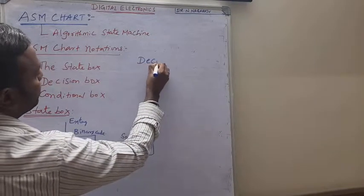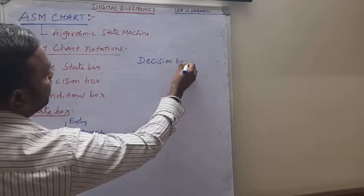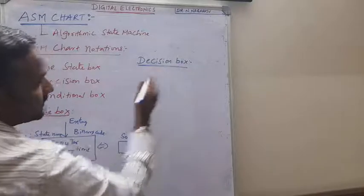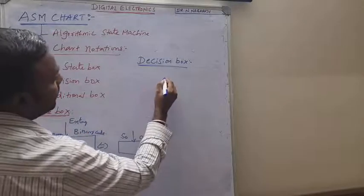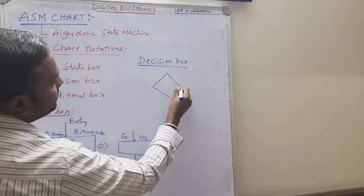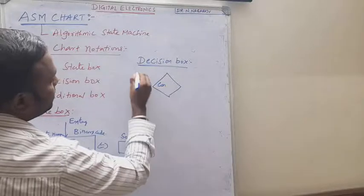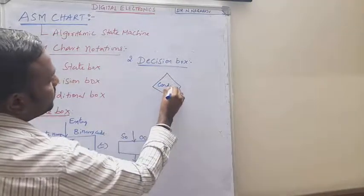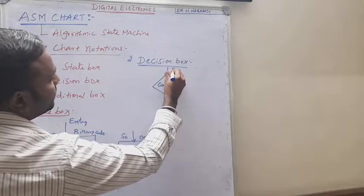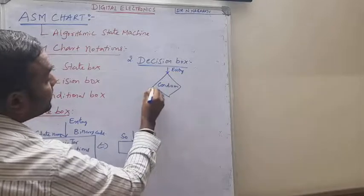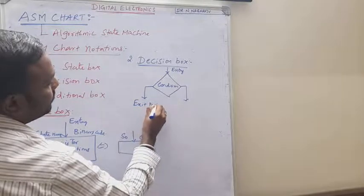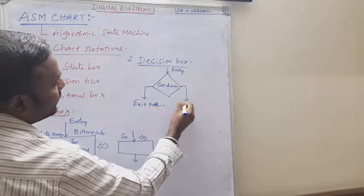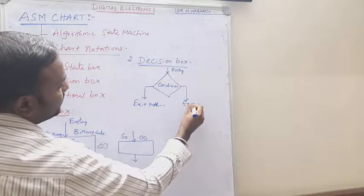The second notation is the decision box. The name itself tells you it is used to make decisions — whether if the input is 0, what will happen, and if the input is 1, what will happen. It has one entry and two exit paths: exit path 1 and exit path 2.